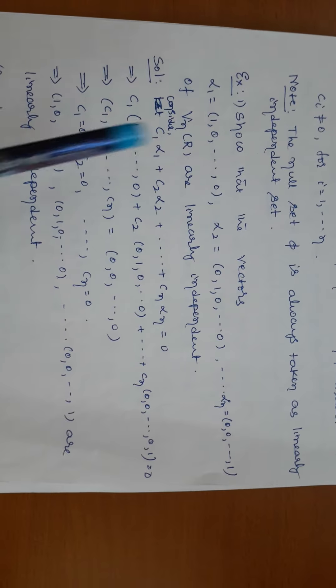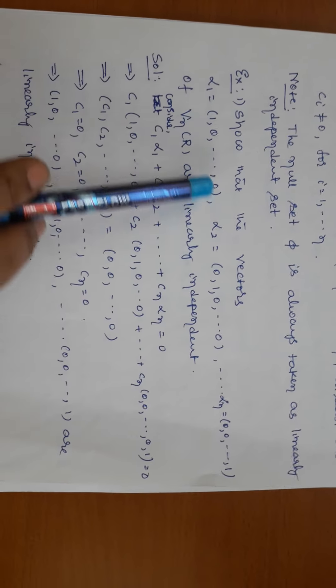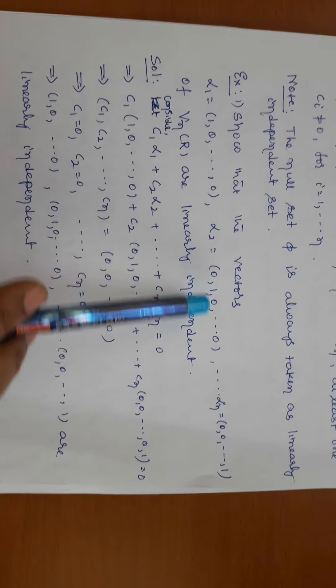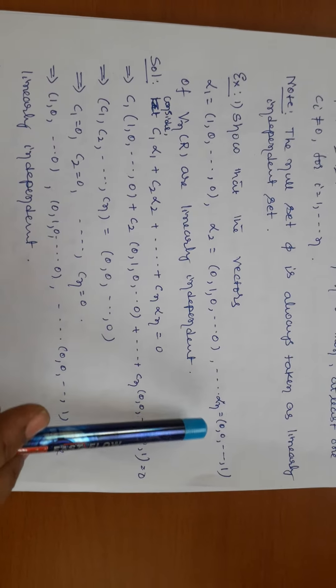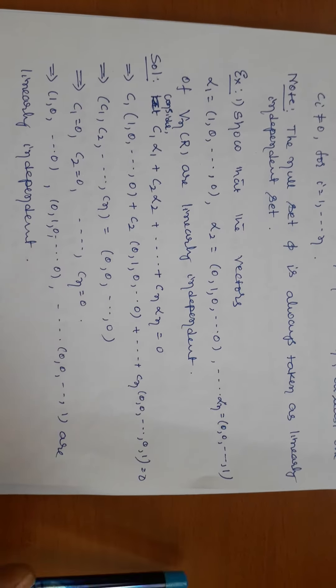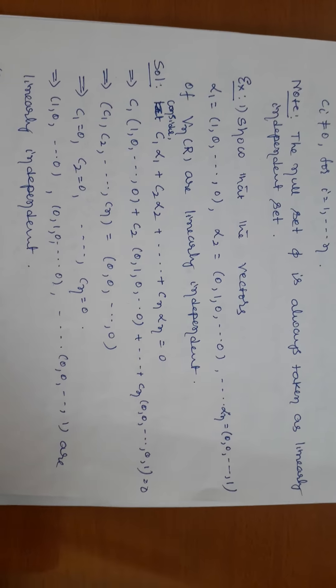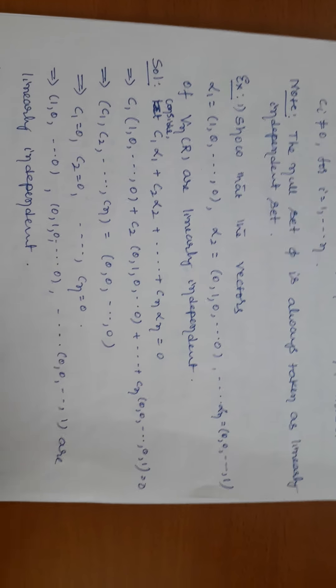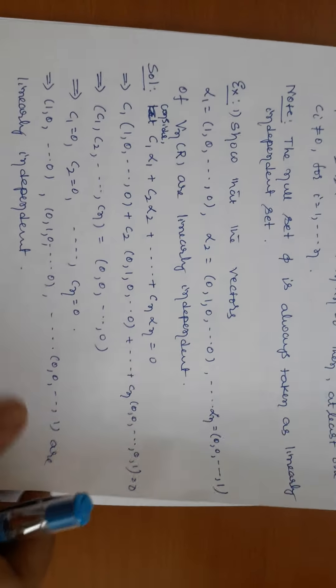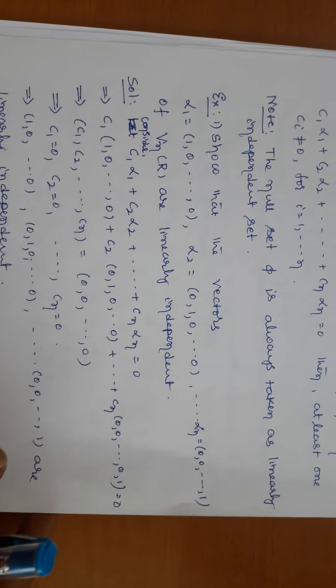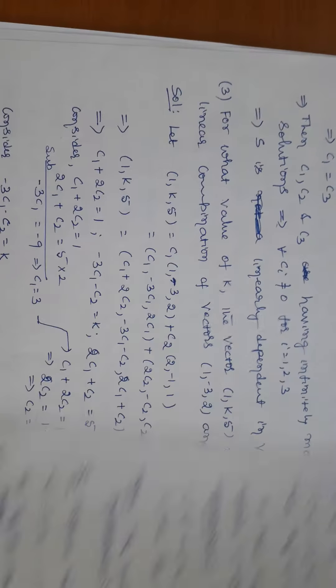Then we say that the vectors (1,0,0), (0,1,0), and (0,0,1) are linearly independent vectors. This is the way to verify whether a set is linearly independent or dependent.